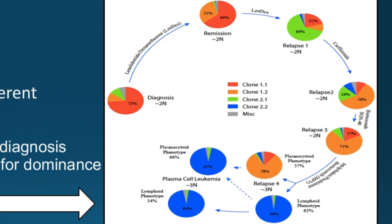At diagnosis, the red subclone predominates, but after treatment there is the emergence of the orange clone. With more treatment, at relapse it's a green clone accounting for the relapse, and then back to orange. In the terminal phase of the disease — plasma cell leukemia — there's a sliver of blue that didn't emerge as an important clone until the very end. So different treatments and other factors lead to the predominance of a different clone at different times.